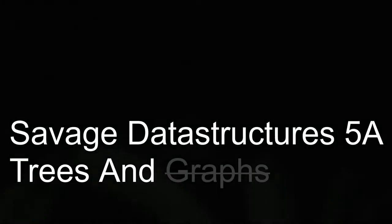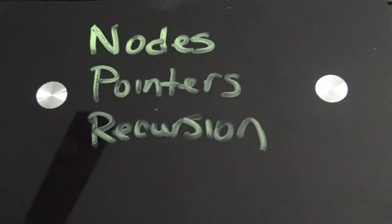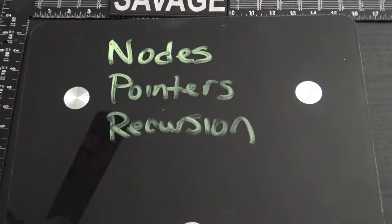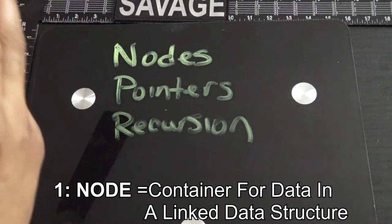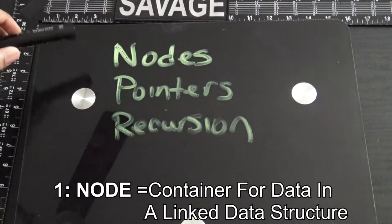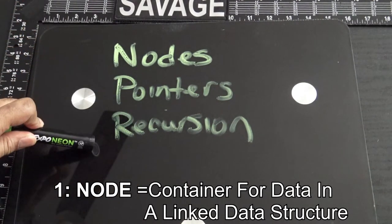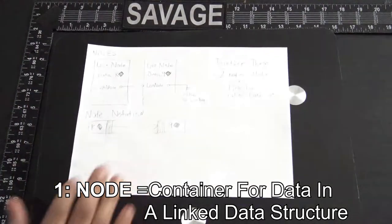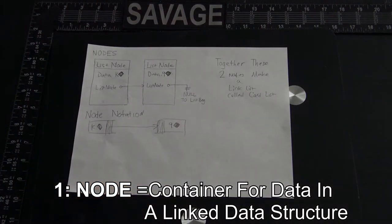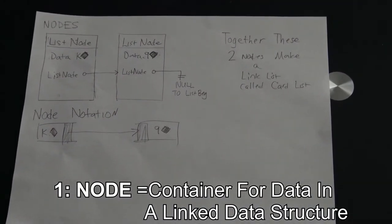Something common with all link-based data structures is the idea of nodes, pointers, and some type of recursion. Let's start off with nodes. A node is the basic building block of more complicated link-based data structures like the linked list. Let me show you what a linked list node looks like.